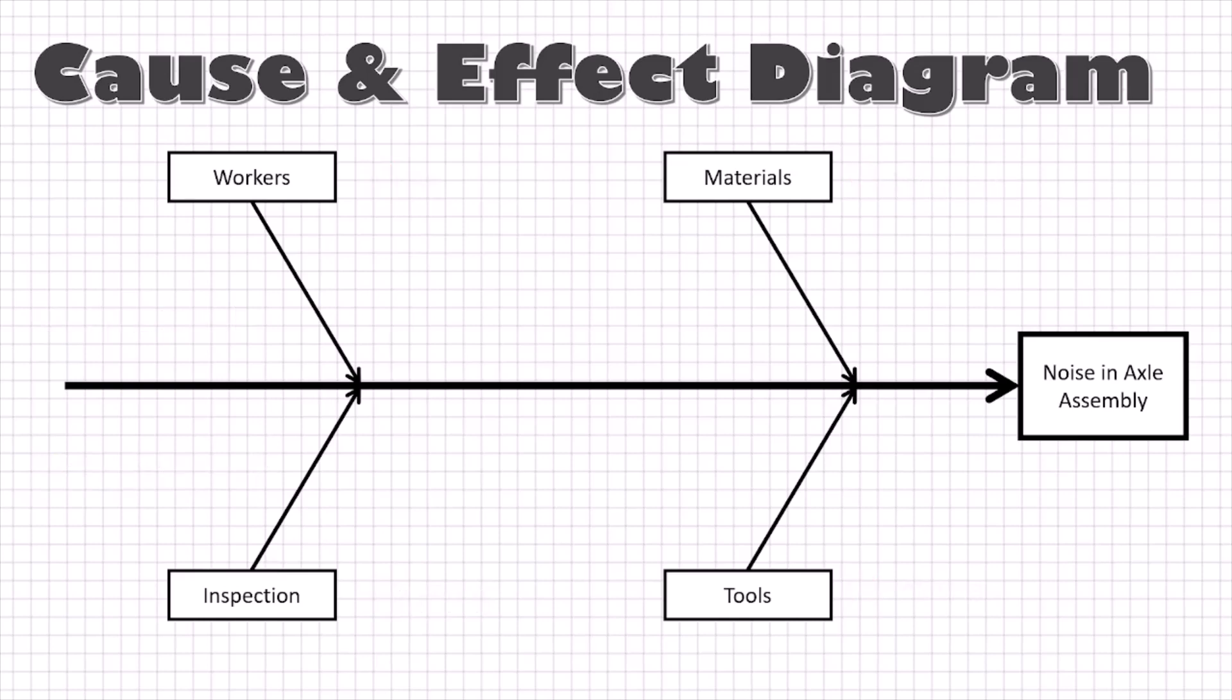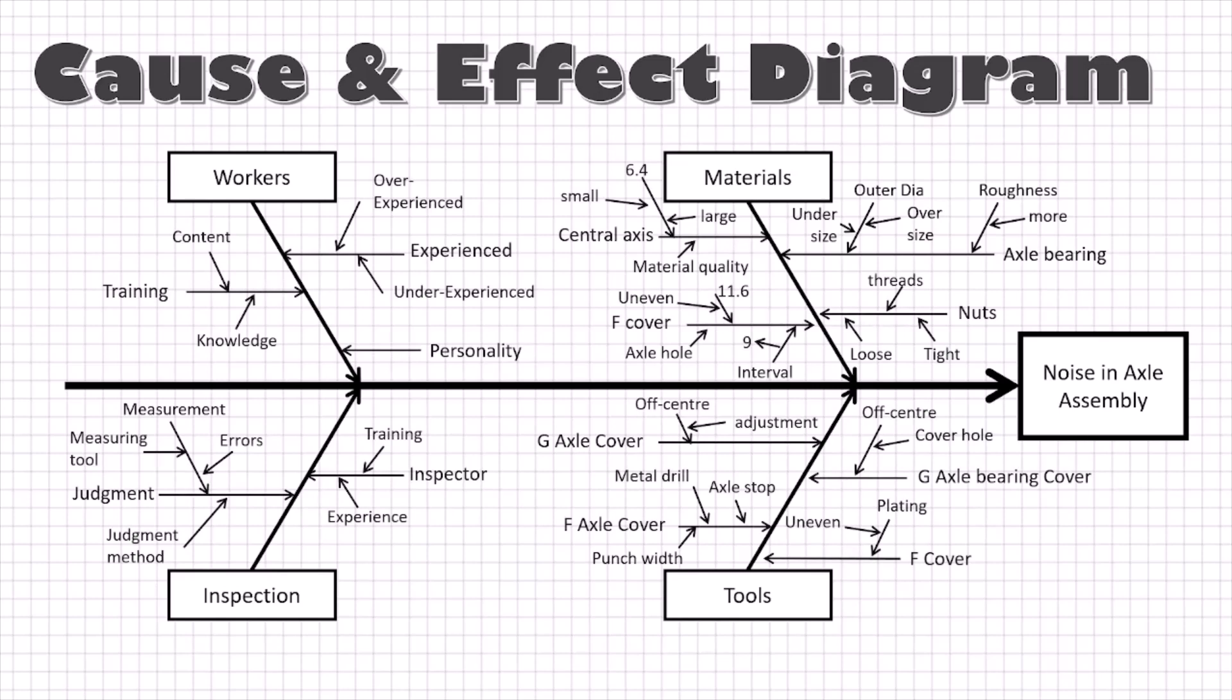Now under each of these four branches, we will ask ourselves what can go wrong and write that factor as a twig onto this branch. For example, for the group material, we can ask what can go wrong in the material. There could be variation in axle bearing, so this becomes a twig on the material. Then we ask what can go wrong in the axle bearing that can cause a noise. We can add outer diameter and we can also add roughness. Then for each twig, we ask what can go wrong again. For outer diameter, it could be oversize or undersize. For roughness, it could be more than specification. In this way, we add to the cause and effect diagram until we have listed down all the possible factors that can result in our target quality characteristic.